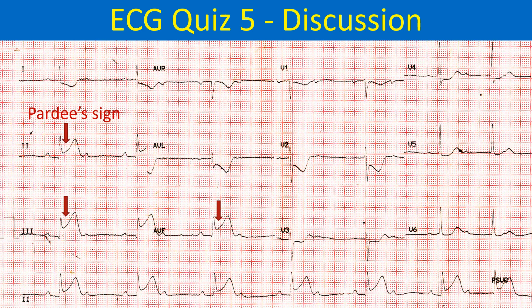Hyperacute inferior wall infarction is evidenced by the prominent upsloping ST elevation in the inferior leads 2, 3, and AVF with upright T waves.